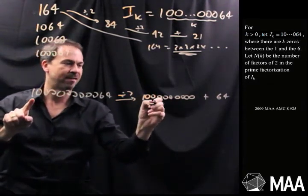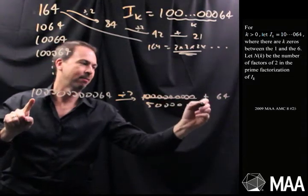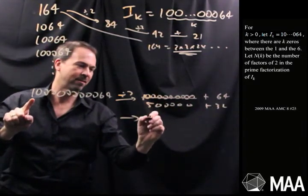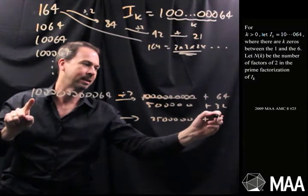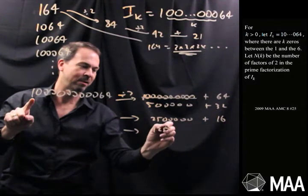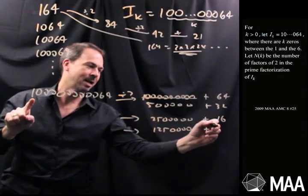If I divide by 2 once, I get 5 with a whole bunch of zeros plus 32. And I can divide by 2 again. And I get 50 divided by 2 is 25 with a whole bunch of zeros plus 16. Well, I can divide by 2 again. So that's 250 divided by 2 is 125, a whole bunch of zeros and an 8.